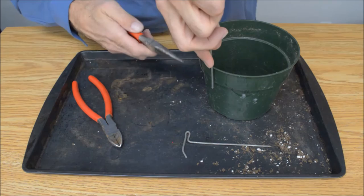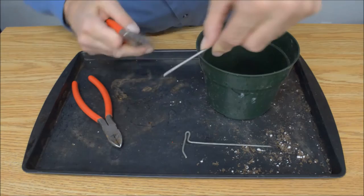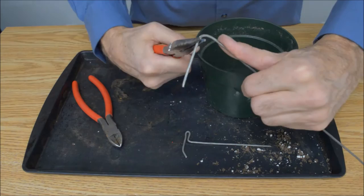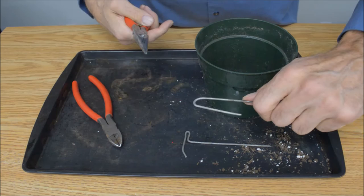So the first thing I do is I get an idea of how long the side of the clip will be by measuring down a bit below this lip here. And I make a simple bend at that point. Go all the way around.